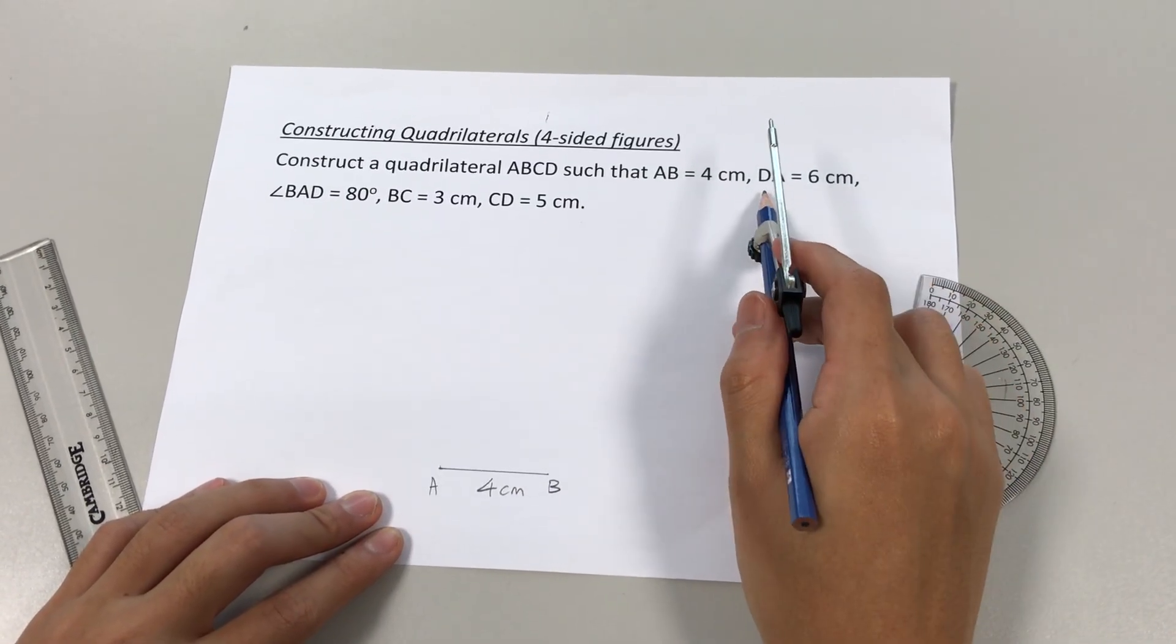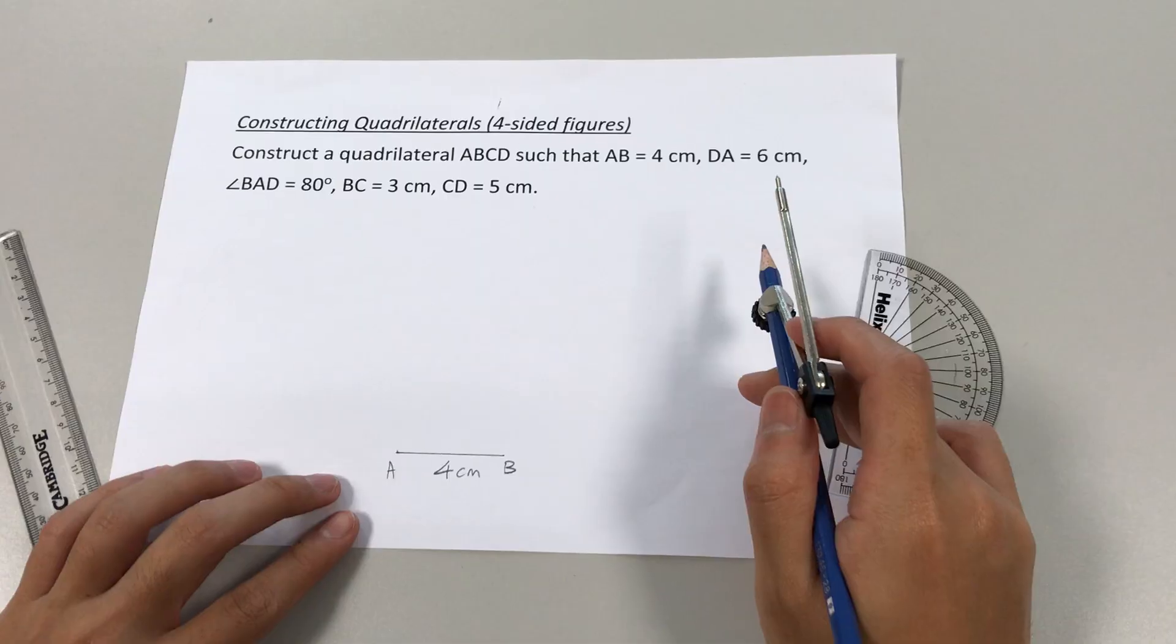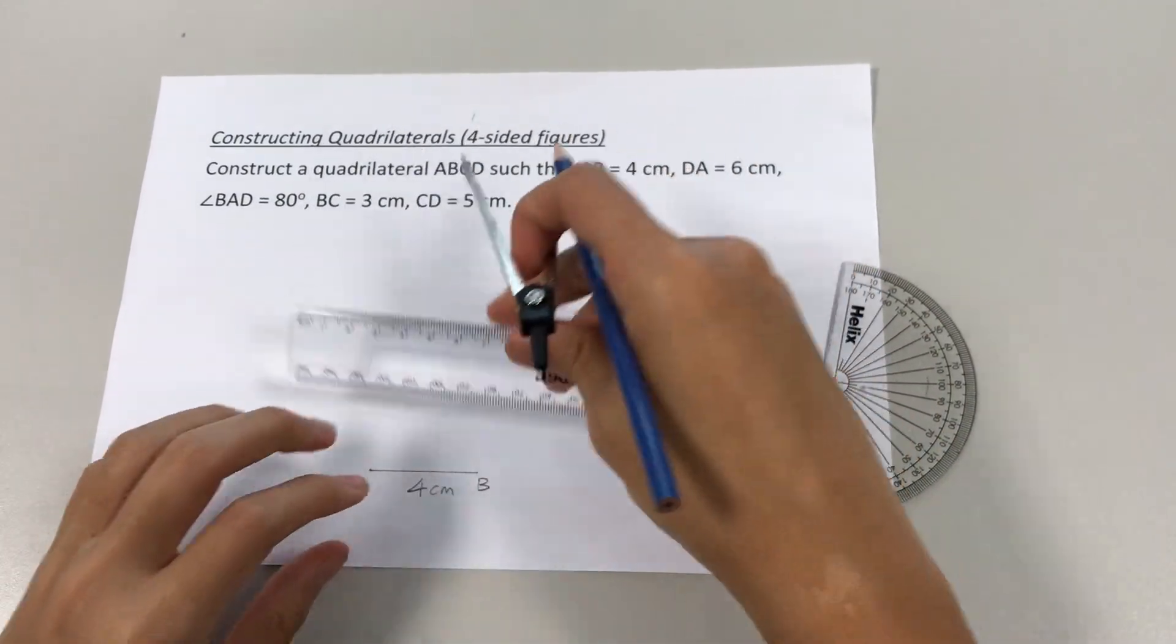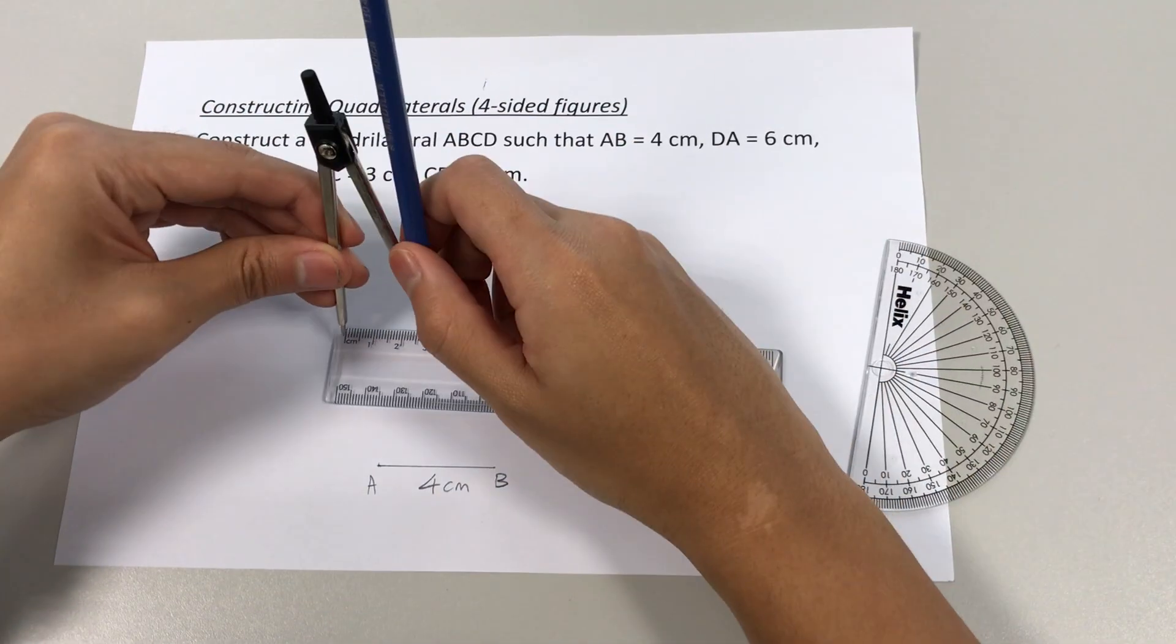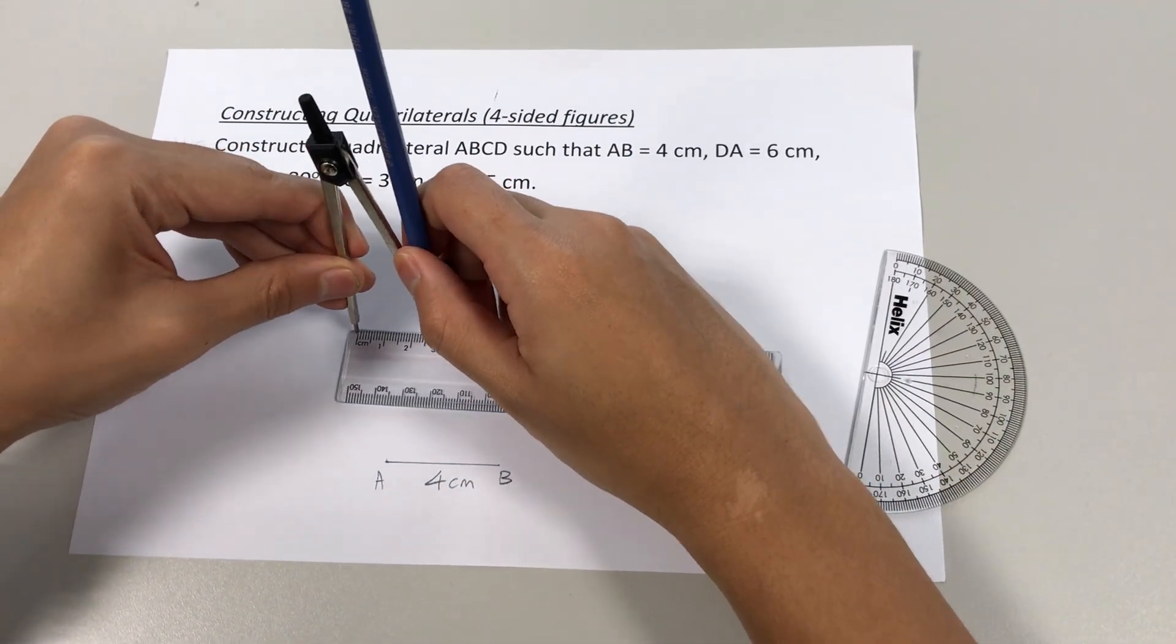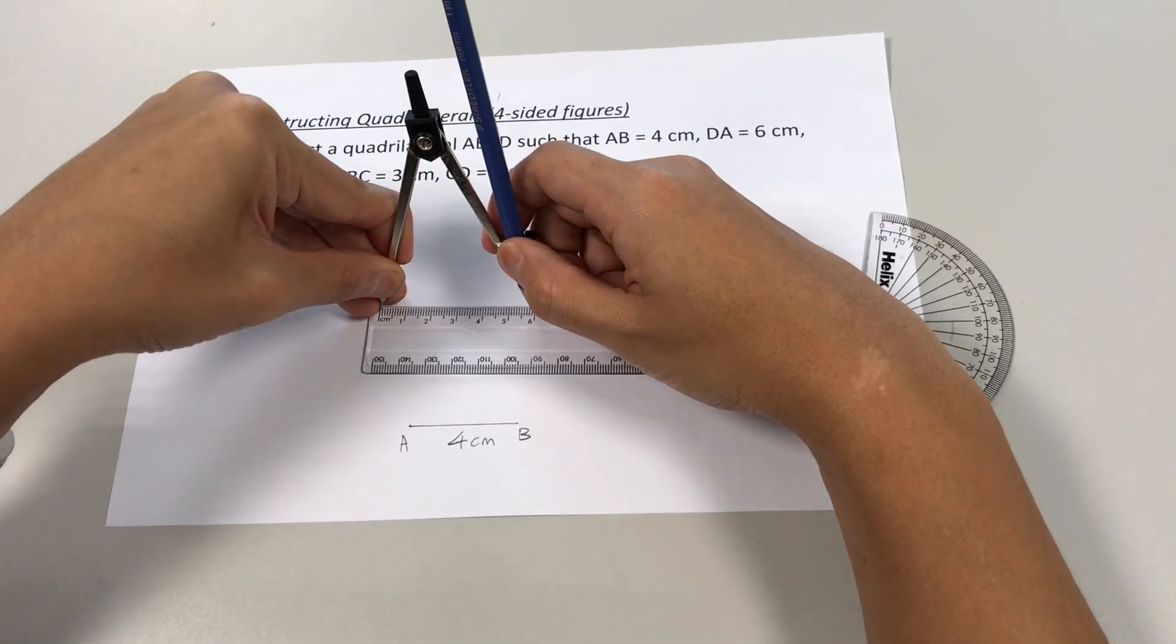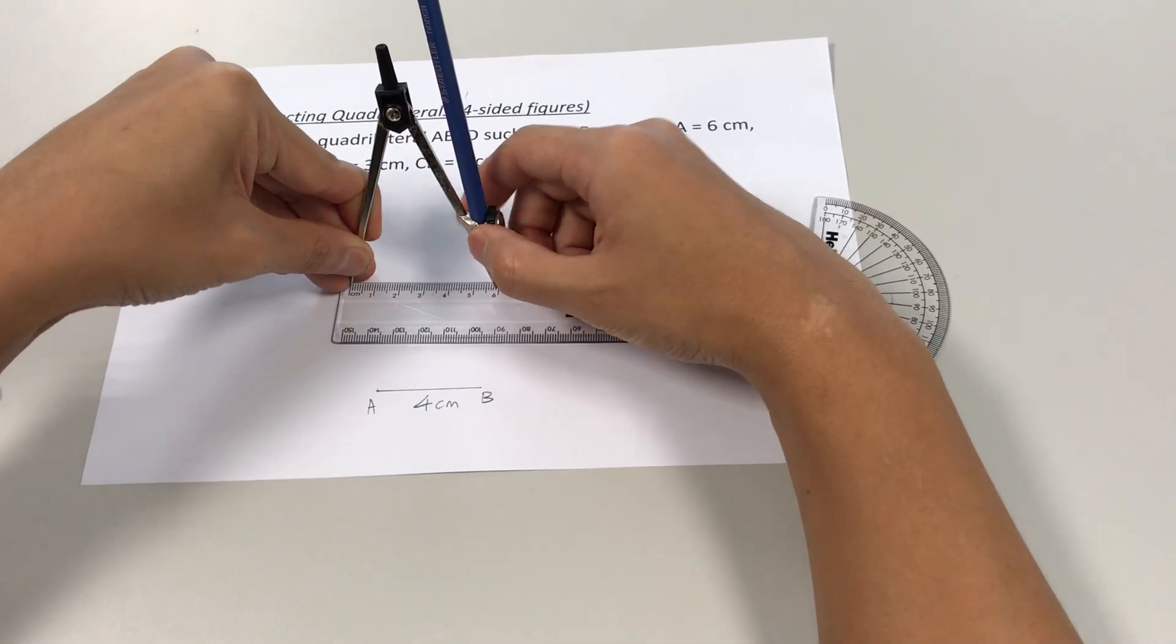Next, we'll mark out DA, which is a six-centimeter line. Okay, for this, we'll need our ruler, our compass. We'll open up to six centimeters. Okay.